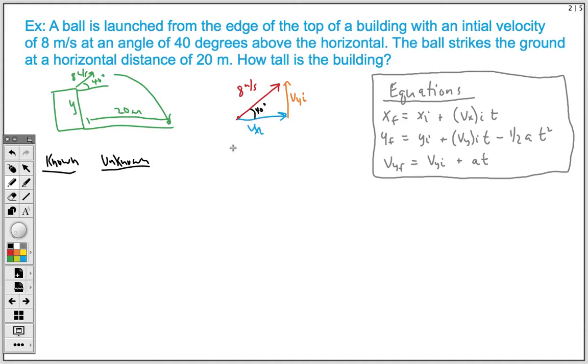So using some trig and our trig functions, if we want to solve for vxi, we're going to end up using cosine. And so we're just going to do the cosine of 40 degrees times our magnitude 8. That's going to give us our vxi, which is 6.1. So that would be 6.1 meters per second.